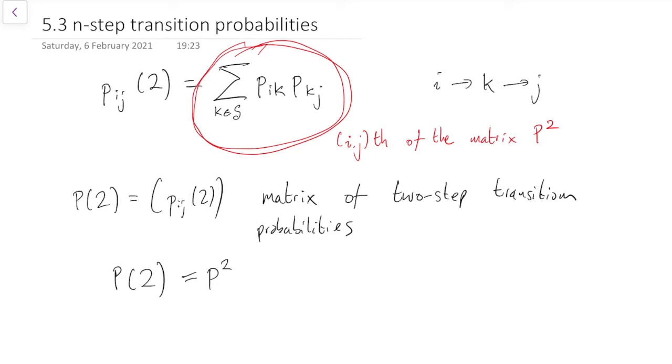So that was why it was so useful to write the transition probabilities in a matrix, because it meant we could get the two-step transition probabilities by squaring that matrix. Perhaps you can guess where we're going to go next.